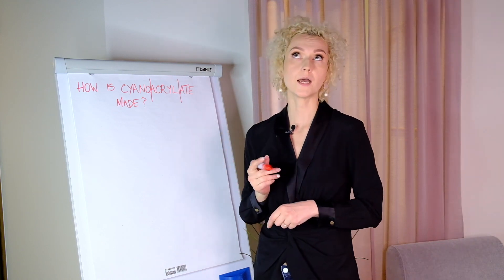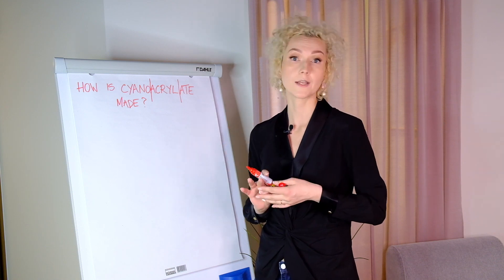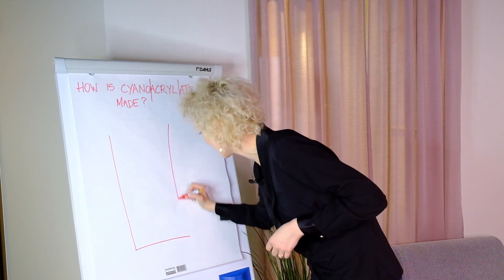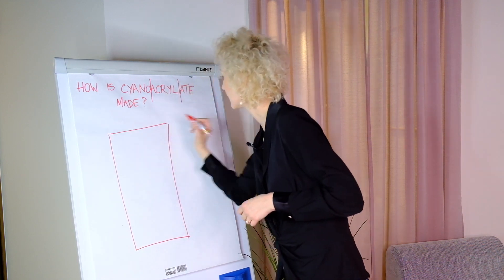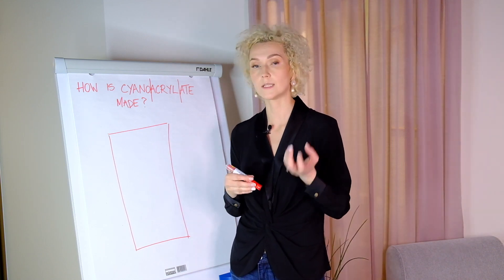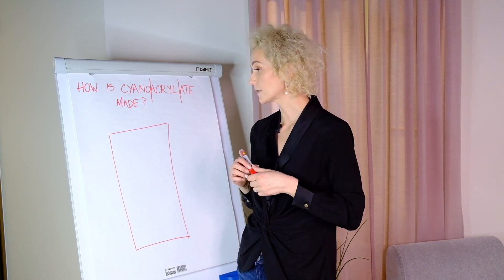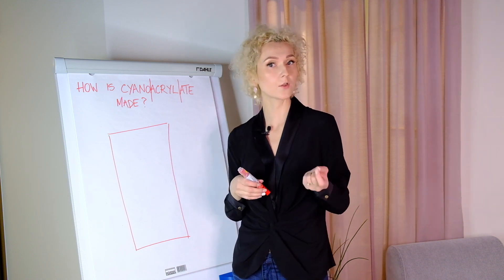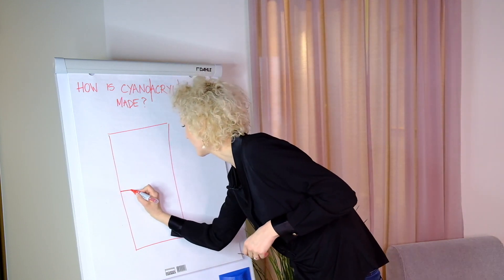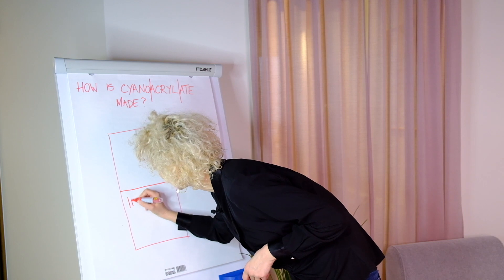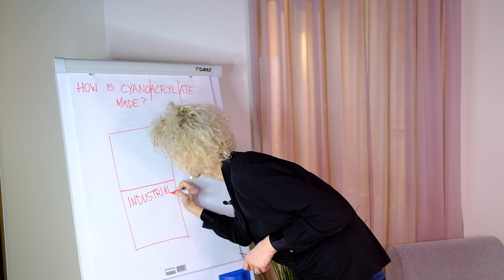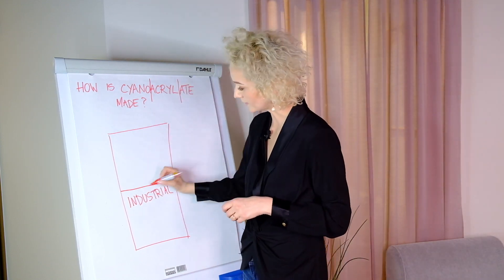Imagine you have a hundred kilos of cyanoacrylic acid. You start the distillation process, and out of the hundred kilos of the acid you get a lot of the industrial grade cyanoacrylates. So this is the industrial grade cyanoacrylates.